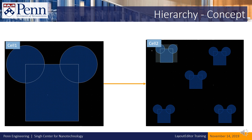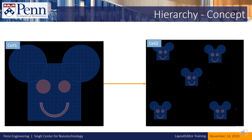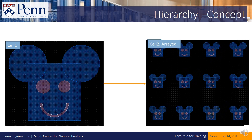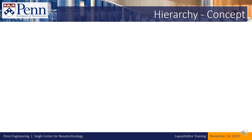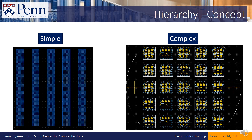If I make a change in Cell 1, that change will be picked up everywhere else I've dropped in a reference to Cell 1. References can be placed randomly, or we could array them instead — specifying the number of units in X, the number of units in Y, the pitch in X, the pitch in Y, and so on. In practice, we use this concept to build everything from very simple designs like a line-space array to very complex designs like a MEMS device.